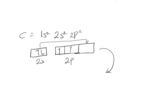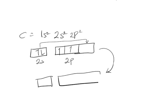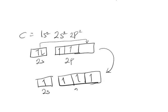In the excited state, we have the 2s orbital and the 2p orbital. The remaining one electron migrated from the 2s to fill up the empty 2p orbital. This is the process of excitation.